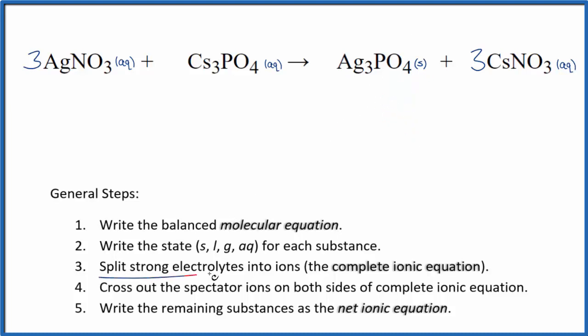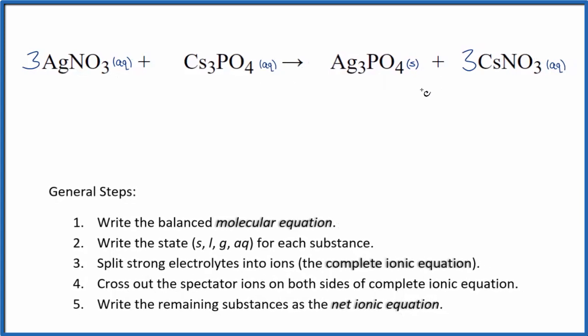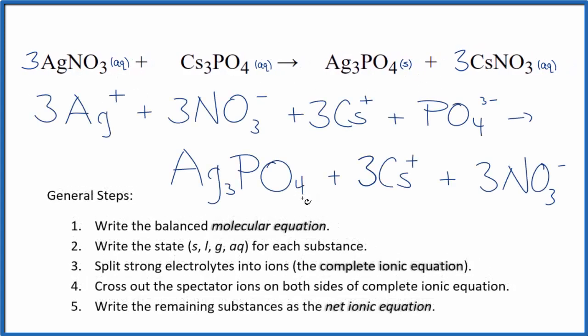Now we can split the strong electrolytes into ions and that's going to give us the complete ionic equation. Note we don't split solids apart in net ionic equations. So the silver phosphate, that's going to stay together. When we split them apart, it looks like this. So this is the complete ionic equation.